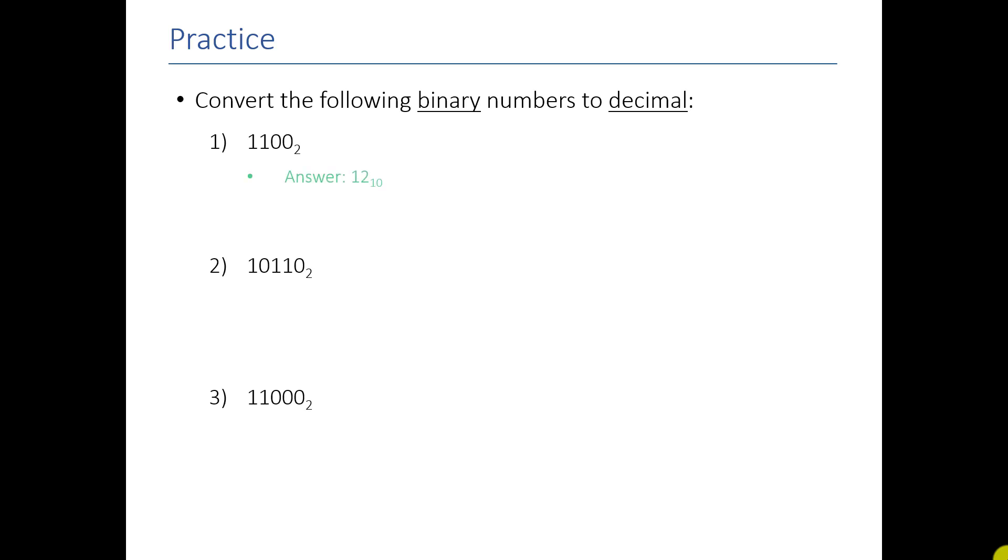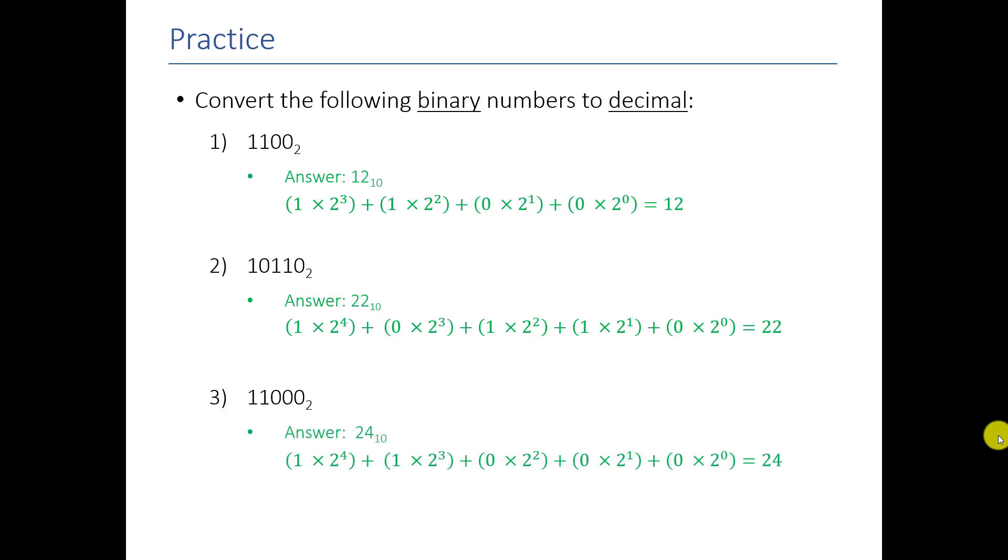Hopefully you paused the video, but let's go ahead and go through these one by one. So 1100 is the decimal value of twelve. So you can think of this as the two to the zero, two to the one, two to the two, and two to the three. So if I was to add it out, it would be one times two to the three, plus one times two to the two, plus zero times two to the one, plus zero times two to the zero. And if I add those up, that's eight plus four equals twelve. So now I'm just going to show you the answers for the other ones. This is 22, and this one is 24.